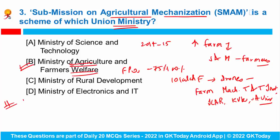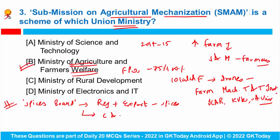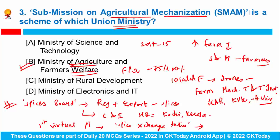Spices Board is a regulatory and export promotion agency of spices working under the Ministry of Commerce and Industry, headquartered in Kochi, Kerala. Recently, it launched the country's first virtual platform for spice exports named Spice Exchange India. India exports 225 different spices and spice products to more than 180 countries. This is a 3D virtual platform that connects India's spice exporters with buyers from around the world using artificial intelligence.